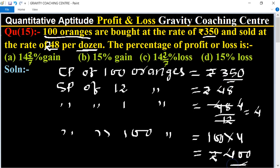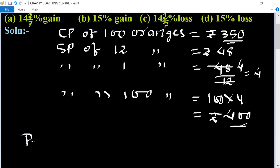So here the cost price of 100 oranges is 350 and the selling price of 100 oranges is 400. So selling price is greater than cost price, so it will be profit.